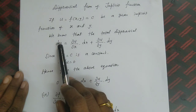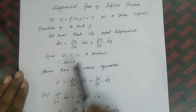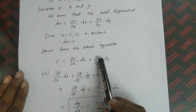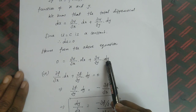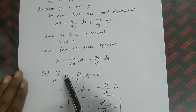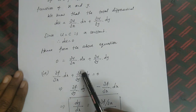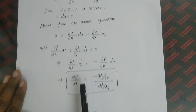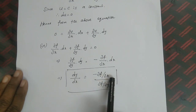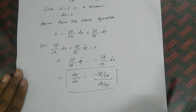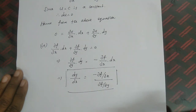Substituting du = 0 on the left-hand side, we get (∂u/∂x)dx + (∂u/∂y)dy = 0. Writing f instead of u: (∂f/∂x)dx + (∂f/∂y)dy = 0, from which dy/dx = -(∂f/∂x) / (∂f/∂y). Using this result, we can now solve some problems.